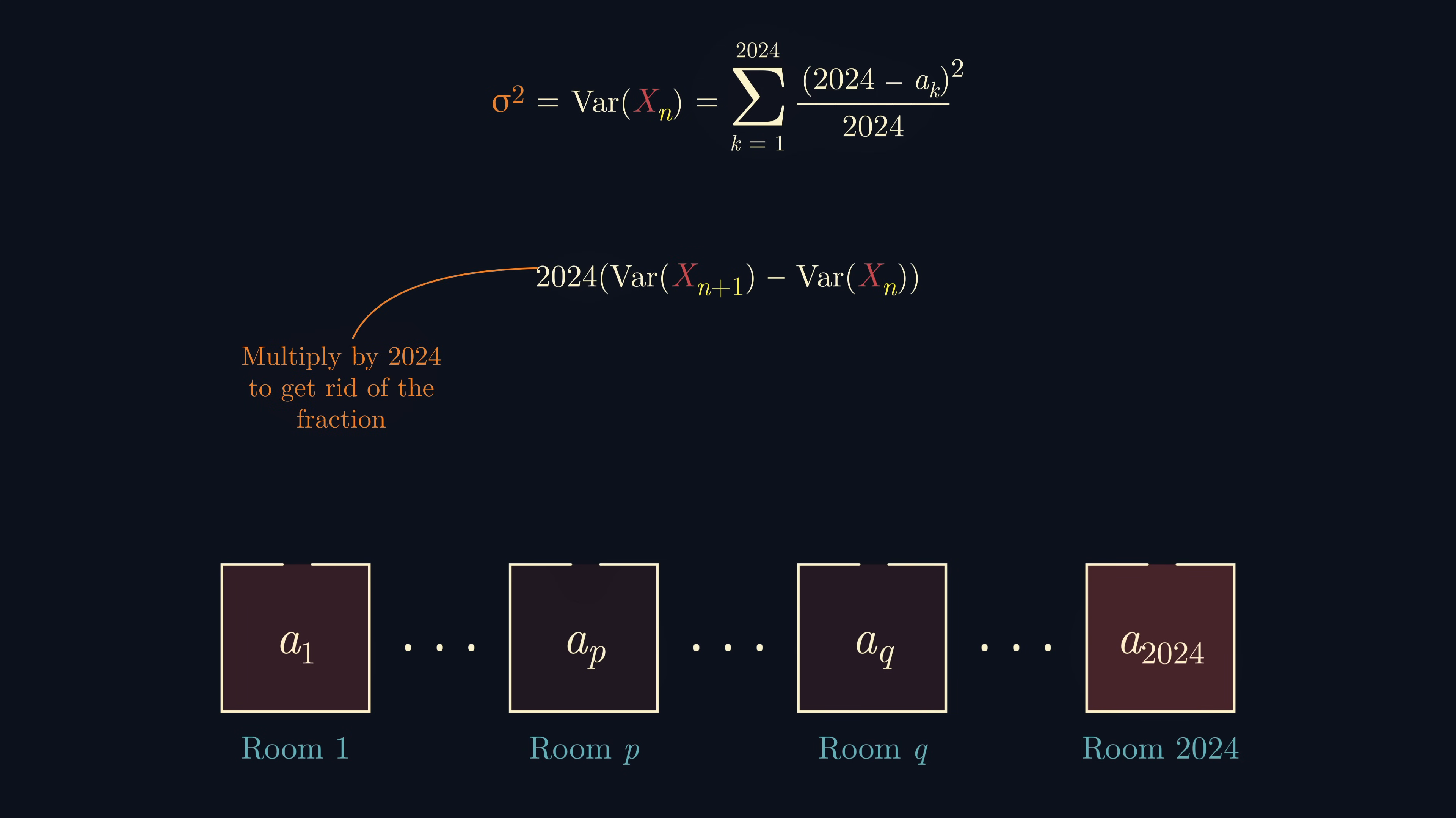Suppose that at the n plus one second, an insect moved from a room with x insects into a room with y insects. Then the difference in the variance of xn plus one and xn is as follows.